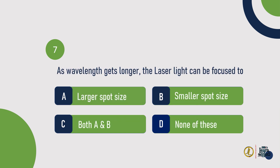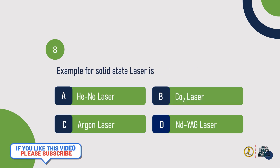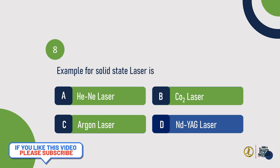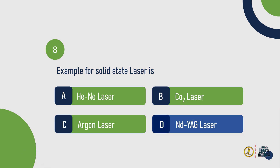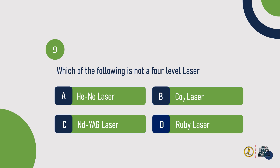Question 7: As wavelength gets longer, the laser light can be focused to a smaller spot size. Question 8: Example for solid state laser is — Nd:YAG laser. Question 9: Which of the following is not a four-level laser? Answer: Ruby laser.